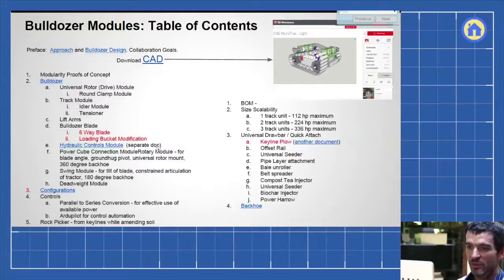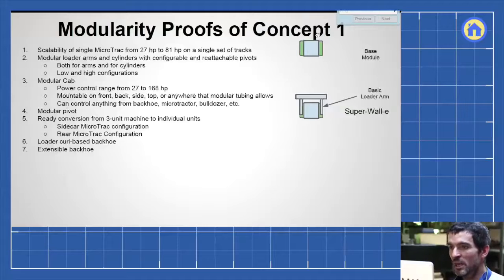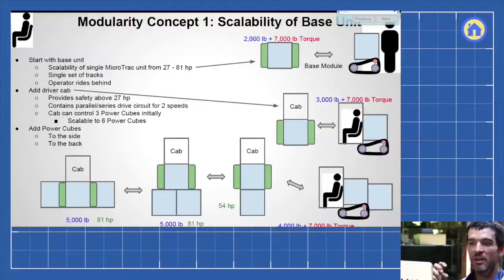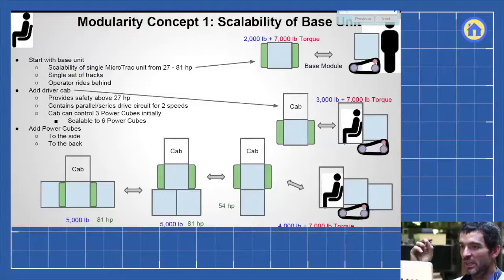Those are the modules we have explored so far. We start with a base module, which is a simple power cube with tracks, to which we can attach a quick-attach loader arm and a quick-attach plate, to which you can attach just about anything. From the base unit, you can add a cab for the operator to sit in.